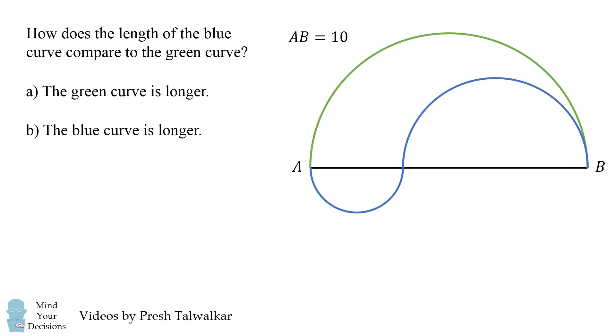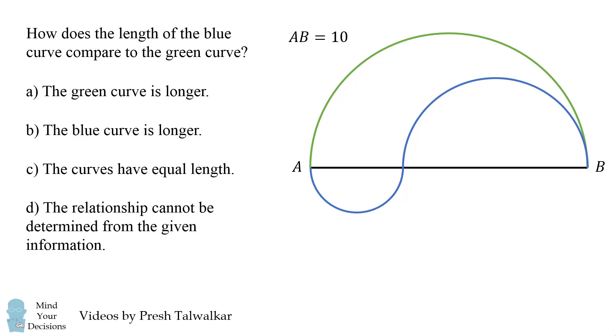The green curve is longer, the blue curve is longer, the curves have equal length, and the relationship cannot be determined from the given information.